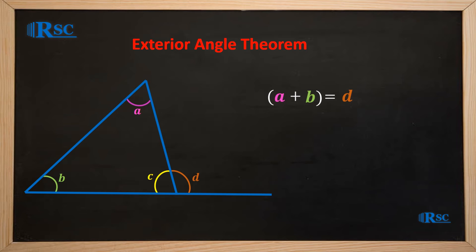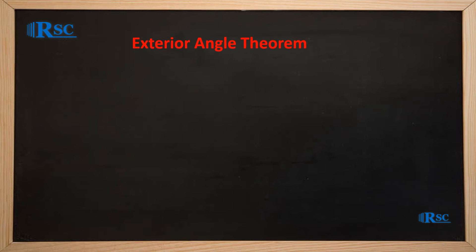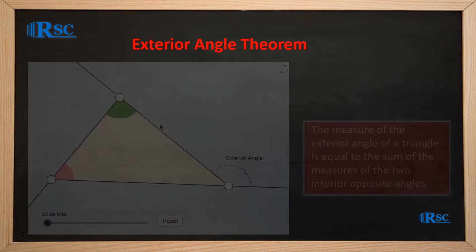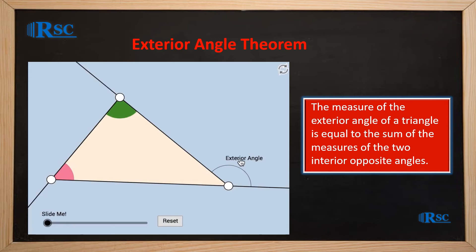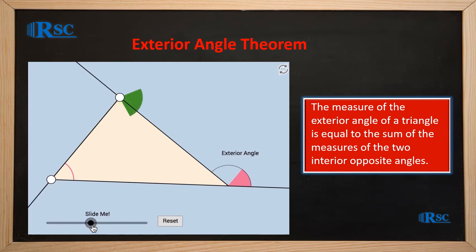We can now state the general rule connecting the exterior angle of a triangle and the interior opposite angles, which is called the exterior angle theorem. The exterior angle theorem states that the measure of the exterior angle of a triangle is equal to the sum of the measures of the two interior opposite angles.